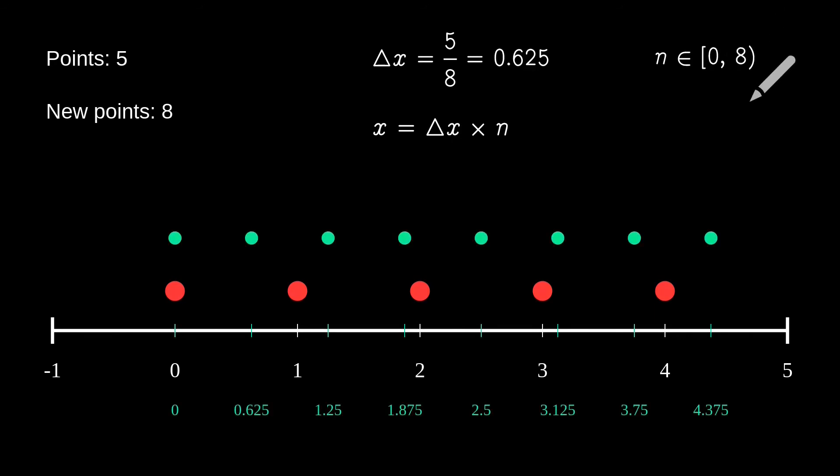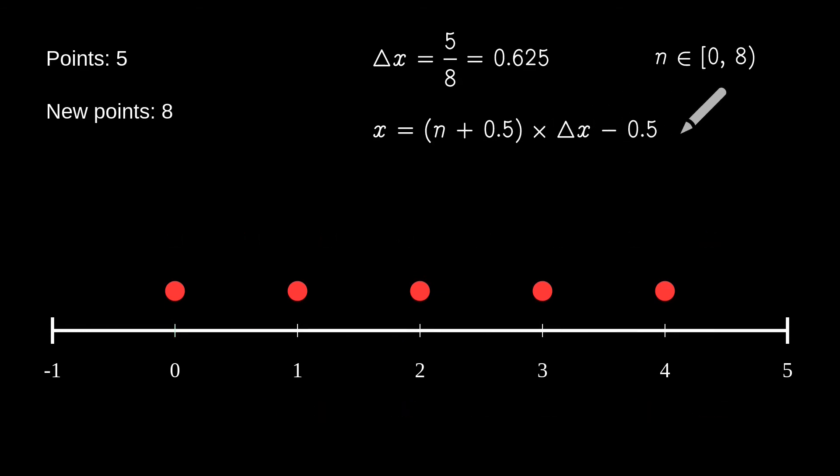But we want the new points to be aligned with the old ones. To do this, we make a small variation. This is how some image editors distribute the position of pixels when resampling images.